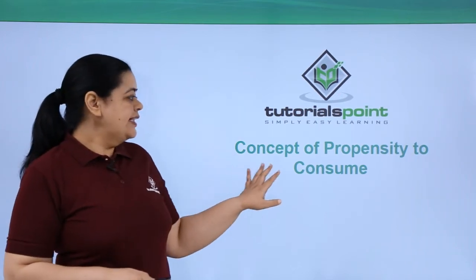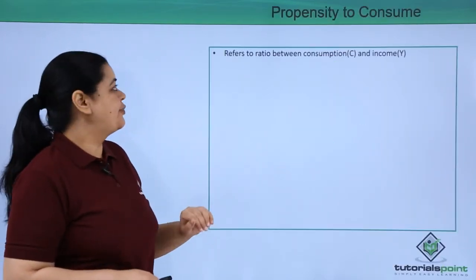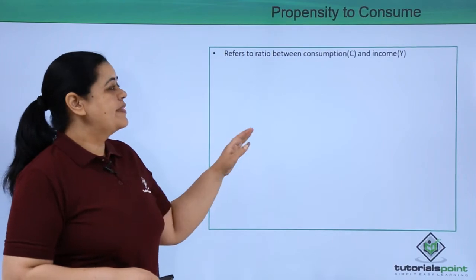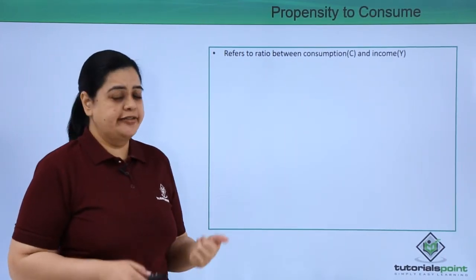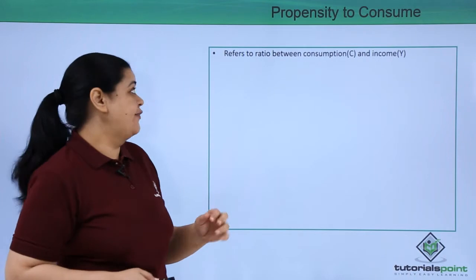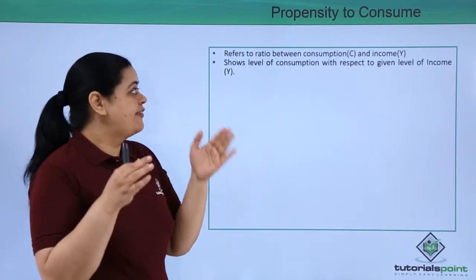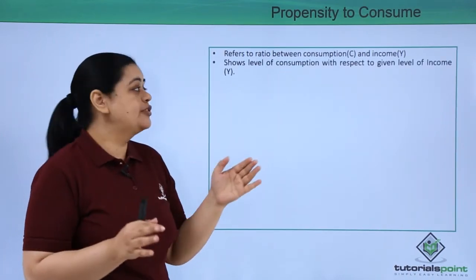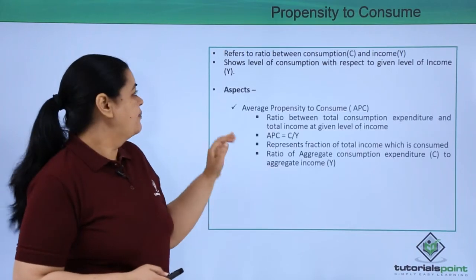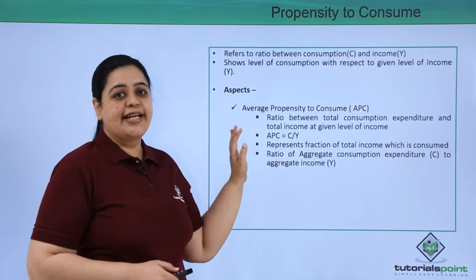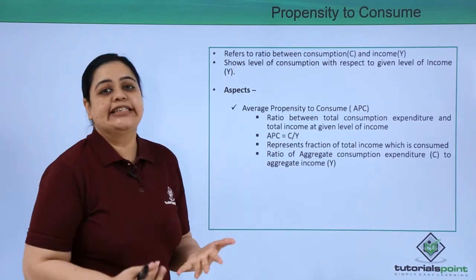Let's understand the concept of propensity to consume. Propensity to consume refers to the ratio between consumption and income — that's C and Y — so it basically tells you the level of consumption with respect to a given level of income.